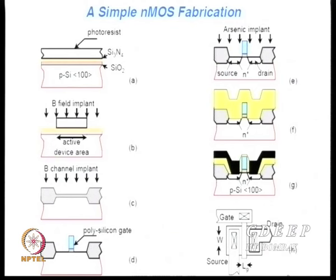In negative resist, the polymer hardens — it does not get etched in normal etchants. Positive photoresists (PPR) are resins that, when they receive light, break their links and become etchable. Both kinds of patterns are used — one with PPR, one with NPR — depending on the mask created.